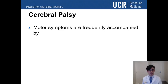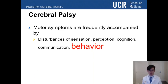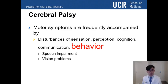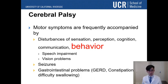The motor symptoms are frequently accompanied by other issues. Children are very astute — they start to see that their peers can do things they can't — and this can cause behavioral disturbances. They can also have speech impairment and vision problems, since tiny muscles in the eyes control eye movement. With a motor problem, the eyes may not move where the child wants them to. Additionally, children can experience seizures and even GI constipation, since muscles in the digestive system can be affected as well.